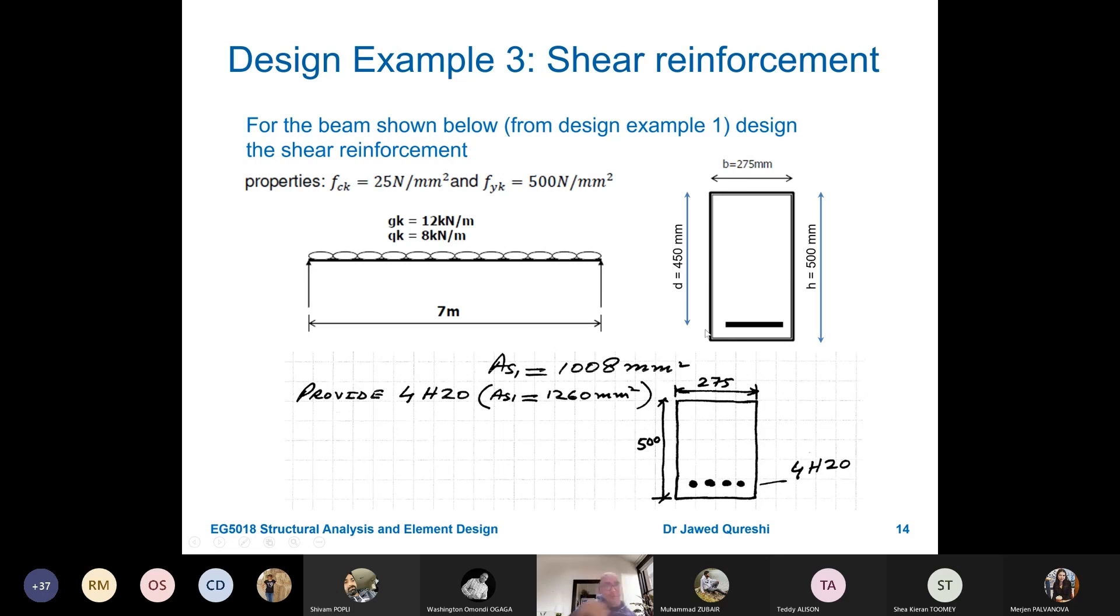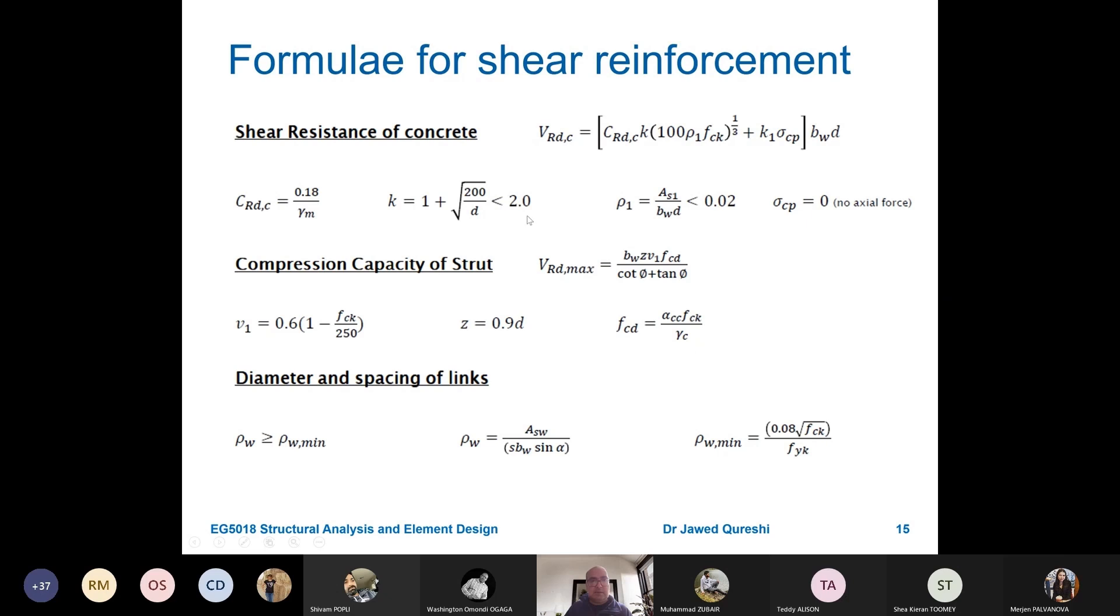If you are asked to design for shear, then certainly AS1 will be given to you. Now, these are the formula that we are going to use. So shear resistance, we will use this formula. Compression capacity of a strut, Z is equal to 0.9D. V1 has got this value, 0.6 into 1 minus FCK over 250. And then diameter of links, you have this formula. I will refer back to this formula time and again.